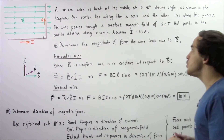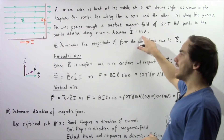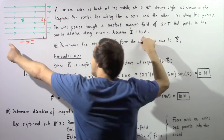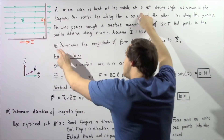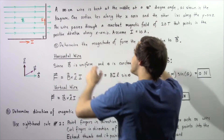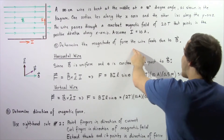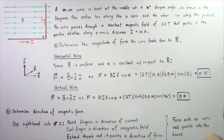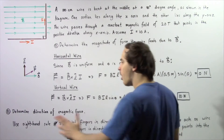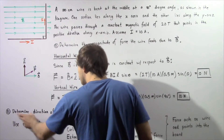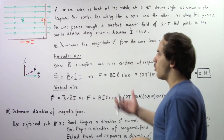Assuming that our electric current is 10 amps and points in the following general direction: in part A, determine the magnitude of force that the wire feels as a result of the magnetic field, and in part B, determine the direction of that magnetic force.